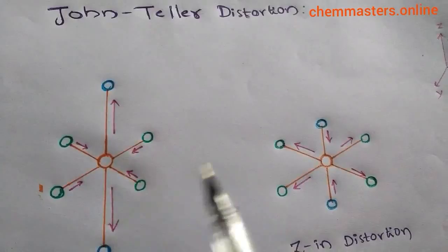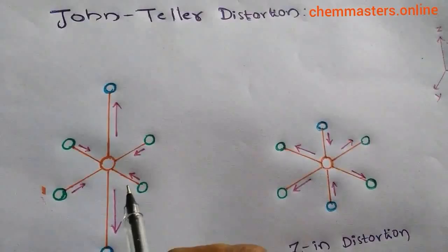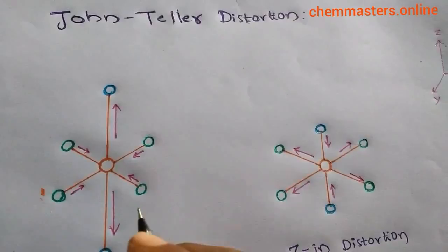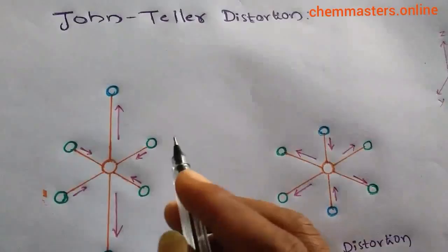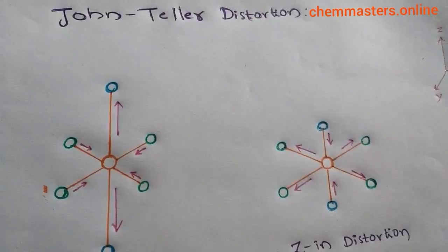First thing — what does Jahn-Teller Distortion tell us? In an electronically degenerate state, a nonlinear molecule undergoes distortion to remove the degeneracy by lowering symmetry and thereby lowering the energy. That is what Jahn-Teller Distortion tells us.